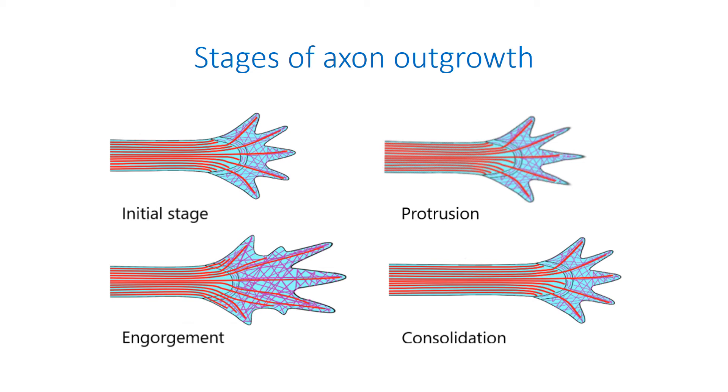During engorgement, actin arcs depolymerize, clearing the region for microtubules to invade deeper into the growth cone, bringing vesicles and organelles. The interaction of actin with an adhesive substrate causes the filaments to be stabilized. Finally, consolidation occurs when the F-actin at the neck of the growth cone depolymerizes and site filopodia retract. The membrane then shrinks to form a new segment of the axon shaft containing the bundle of tightly packed microtubules. The F-actin arcs are re-established and microtubules are limited again to the new central domain. The iterative cycle of protrusion, engorgement, and consolidation results in axon elongation.